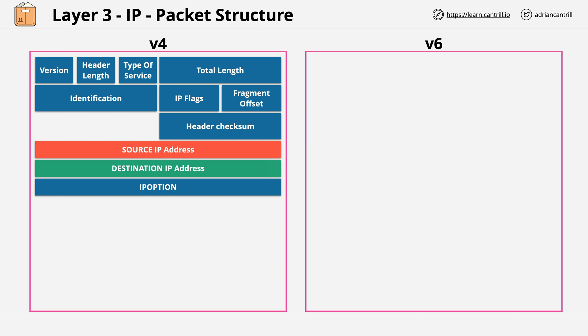In the previous example, we had two networks — one East Coast and one West Coast. The source might be a West Coast PC, and the destination might be a laptop within the East Coast network.